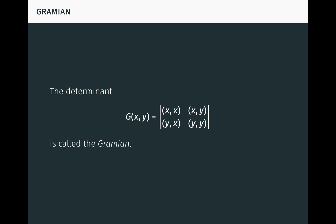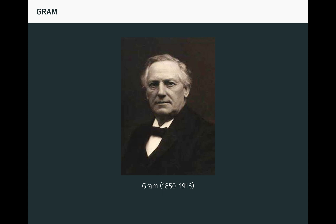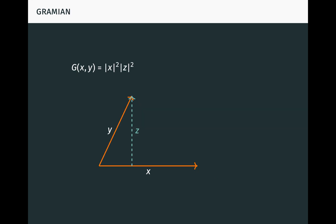That determinant, which is conventionally written g of x, y, is called the Gramian, or Gram determinant, of x and y, and is extremely important with many diverse applications. It's named after the Danish mathematician Jorgen Gram, who worked in the insurance industry and made a number of valuable contributions to mathematics, before later being struck and killed by a bicycle. We saw that g of x, y equals the length of x squared times the length of z squared. Since x and z are the base and height of the parallelogram formed by x and y, it follows that g of x, y is the square of the base times the height, which is the square of the area of the parallelogram. And of course, we already know that that is just delta of x, y squared. So the Gramian has a close connection to the determinant function delta, and like delta, has a natural geometric interpretation.